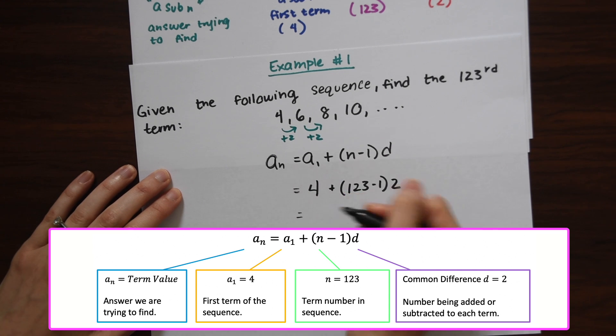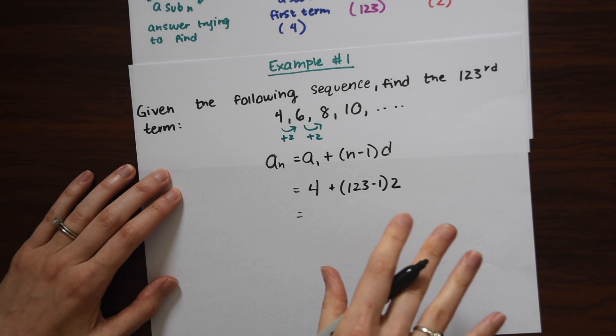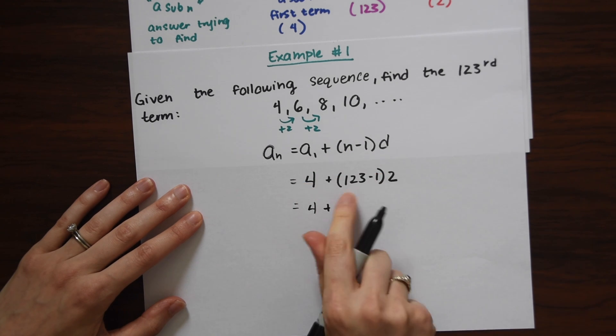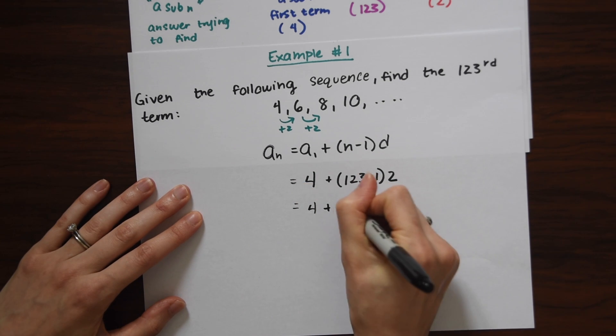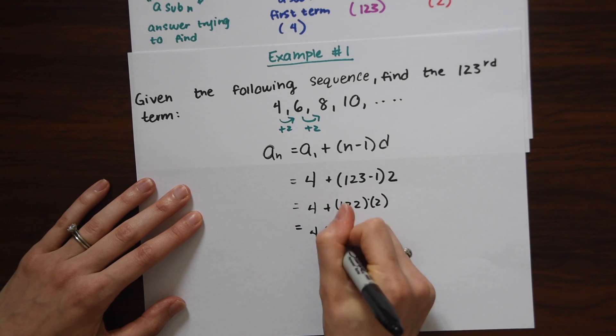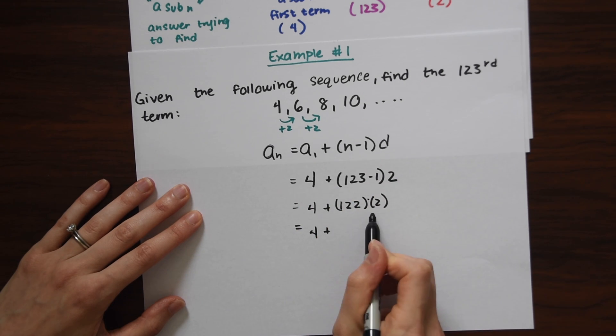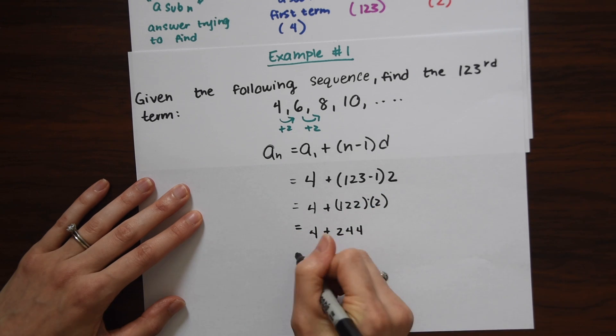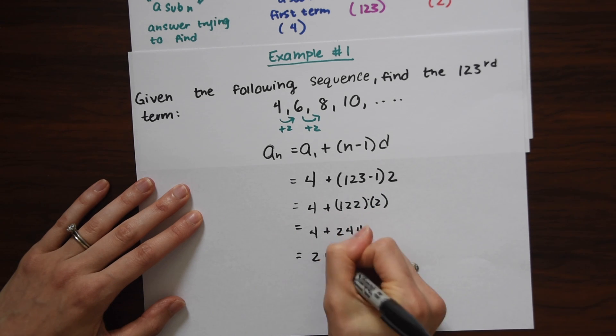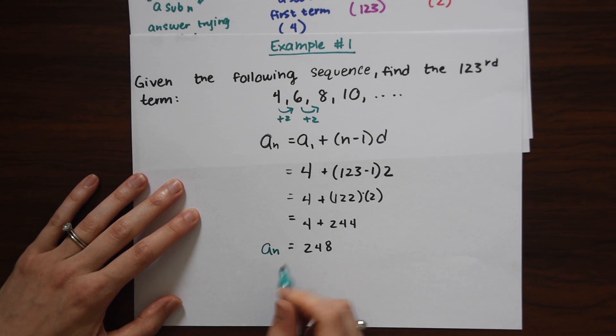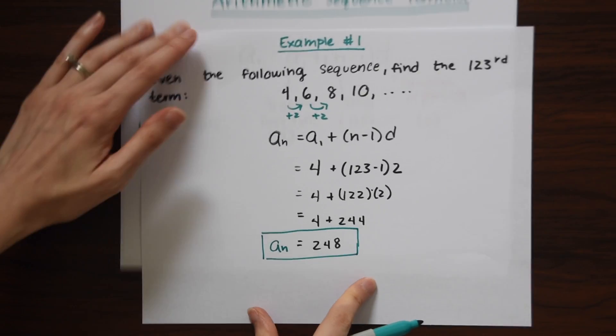And now we just need to find out what this is. So 4 plus, always want to do the parentheses first, 122 times 2 equals 4 plus 122 times 2 is just 244. And then now we're just going to add these together and we get 248. So we know that A sub N is equal to 248. It is the 123rd term of this sequence.